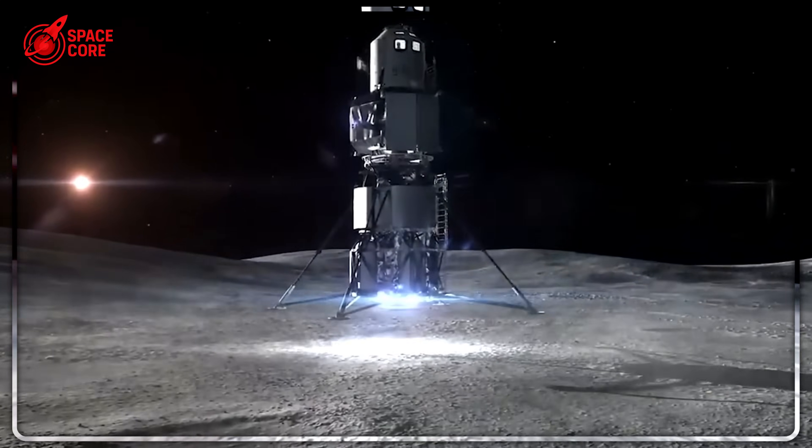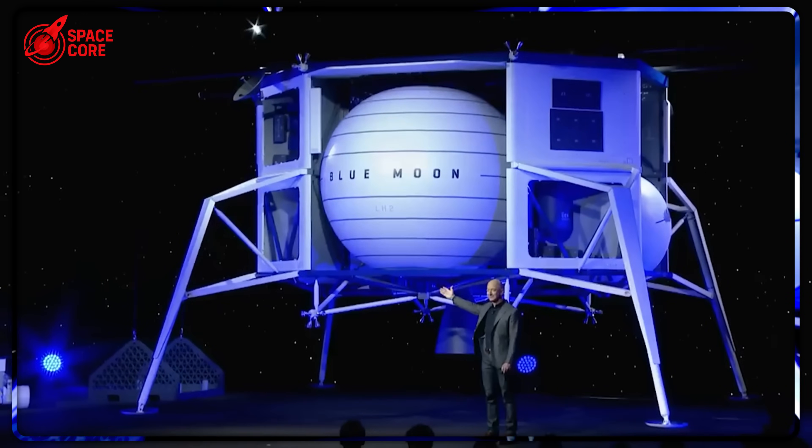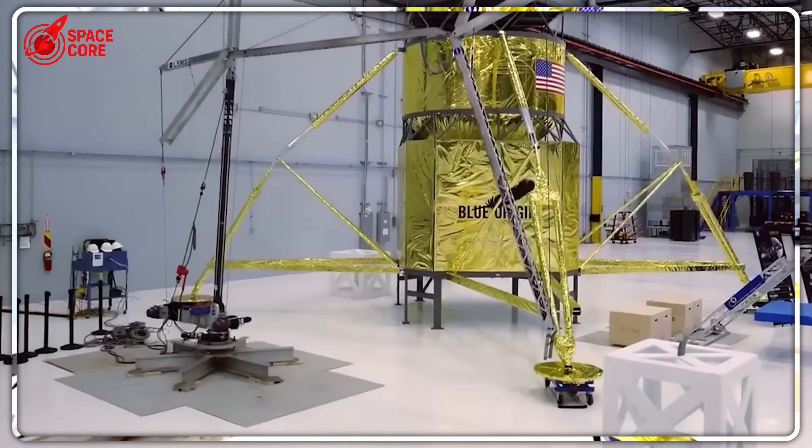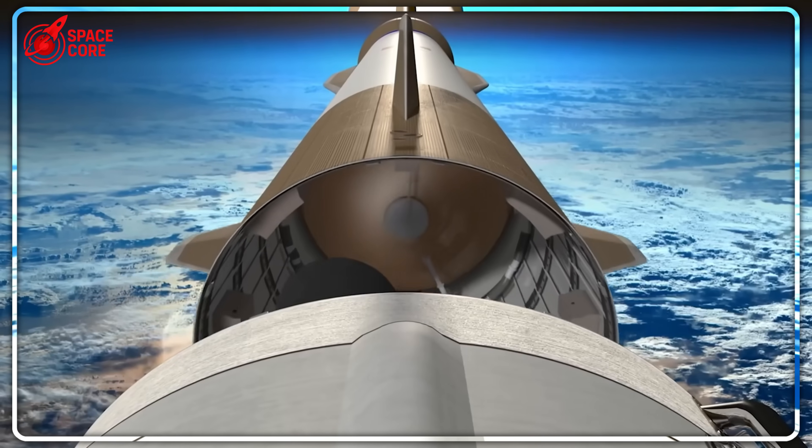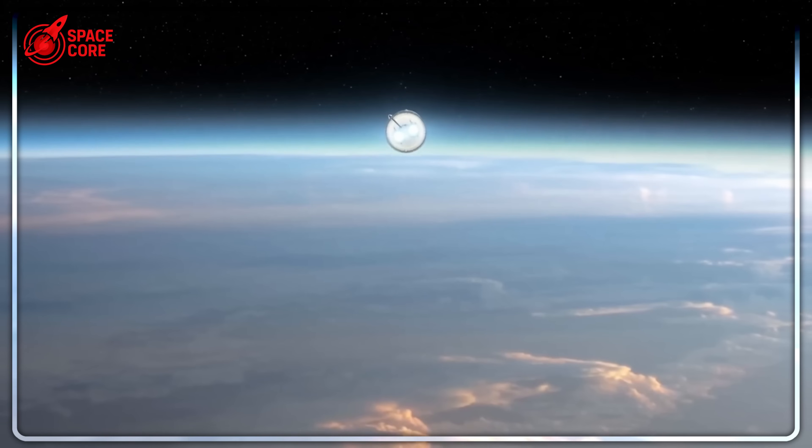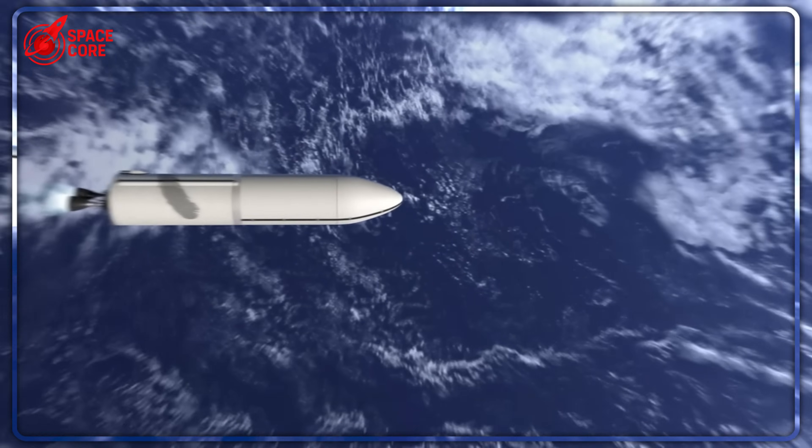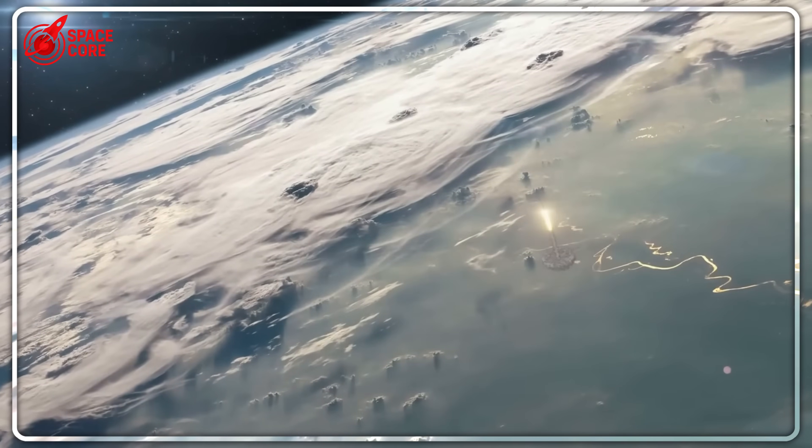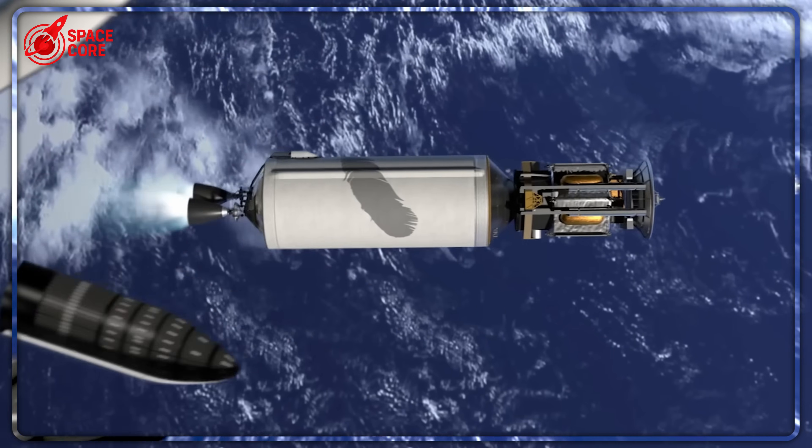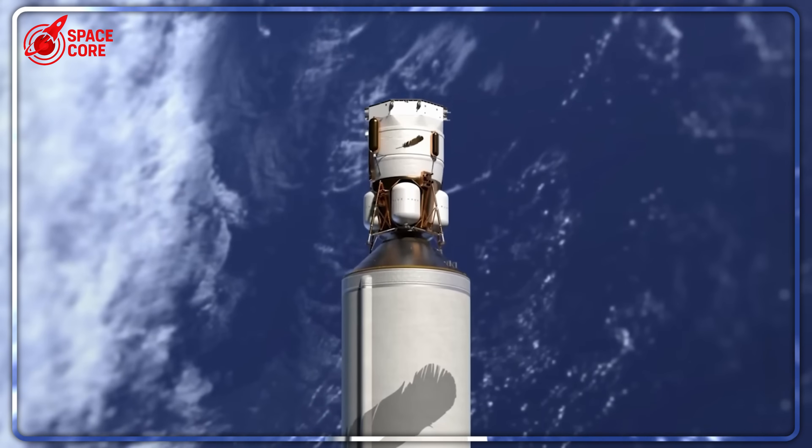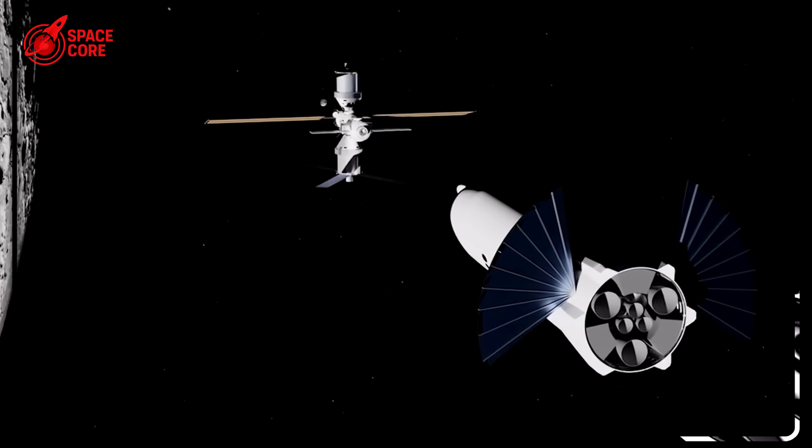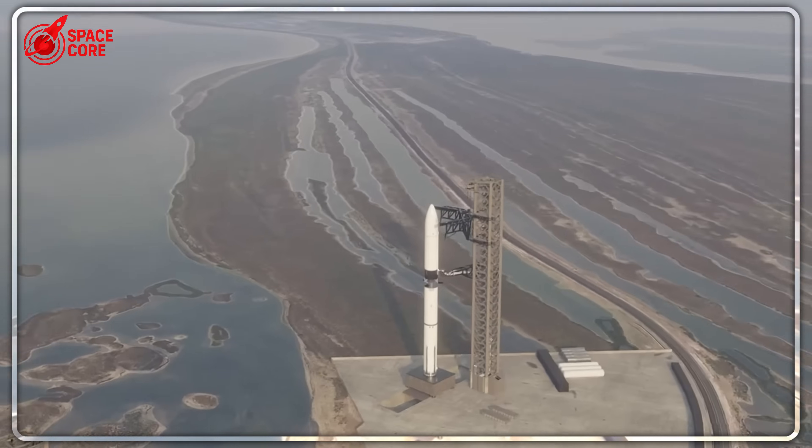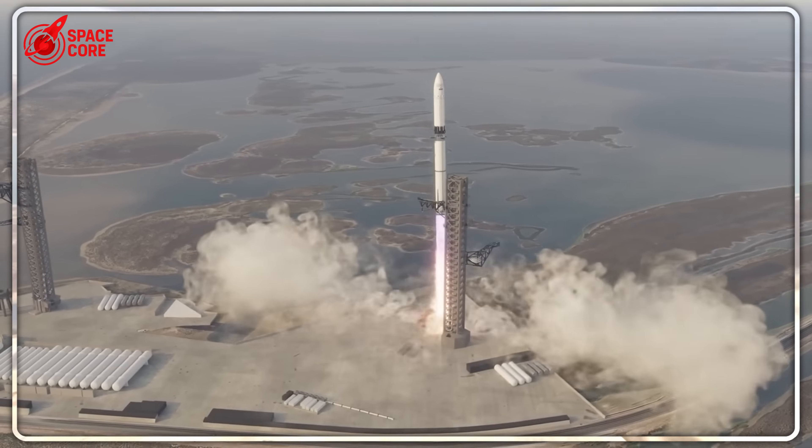Here's where this story gets truly disturbing. Sources inside Blue Origin reveal that Jeff Bezos doesn't just set impossible timelines. He punishes anyone who tells him they're impossible. During a 2023 meeting, when engineers explained that the combustion instability would take at least two more years to solve, Bezos reportedly said, 'then find new engineers.' Three senior engineers were fired that week. The message was clear: tell Bezos what he wants to hear or find a new job. The result? A culture of engineering lies where managers promise impossible deliveries to save their careers. One current Blue Origin engineer, speaking anonymously, told me, 'We've created PowerPoint rockets. They work perfectly in presentations. Reality is optional.'